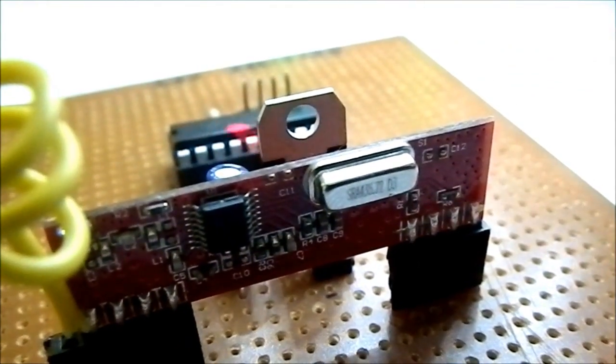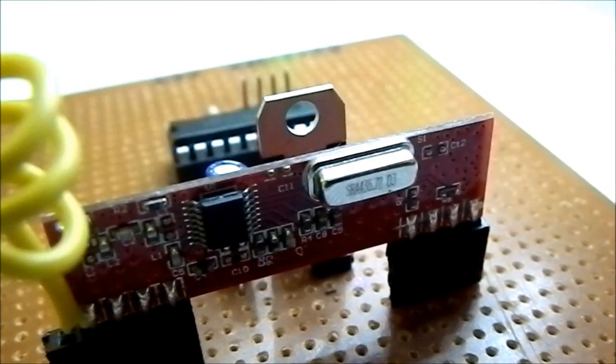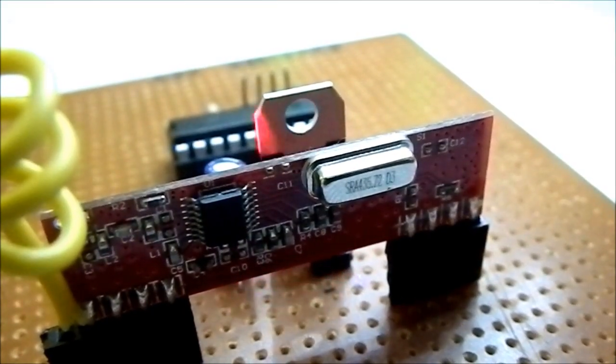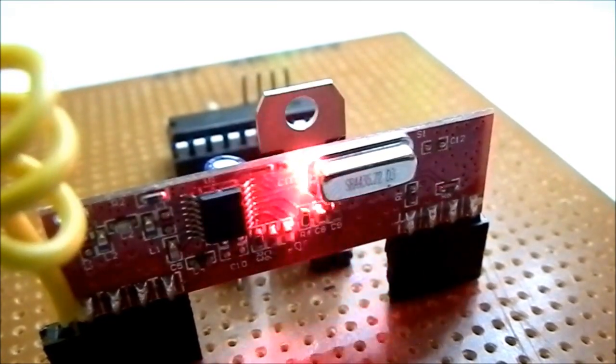This is the receiver unit of the project. It consists of a HT12D encoder, a regulated power supply, and receiver antenna.